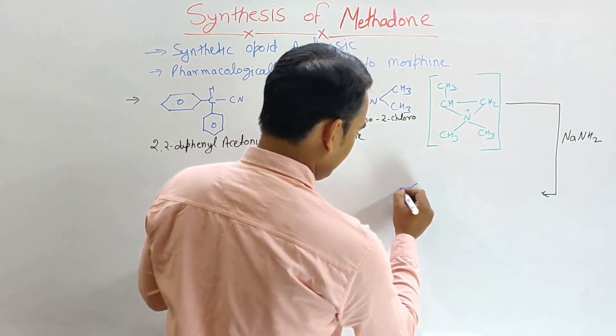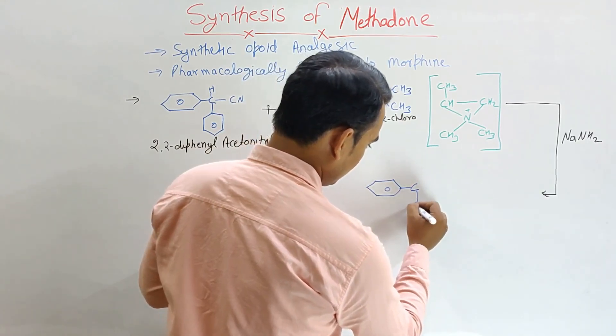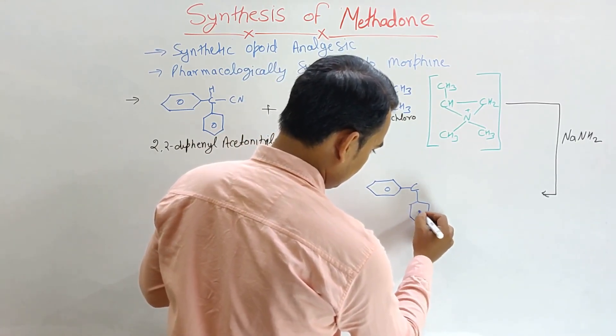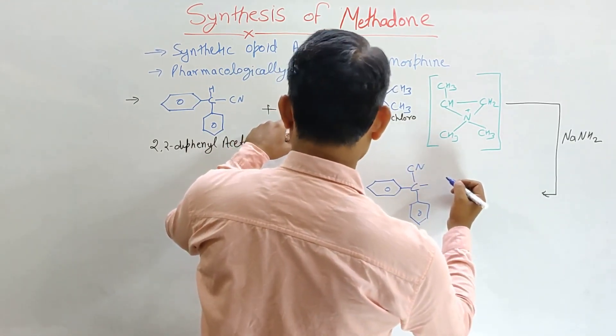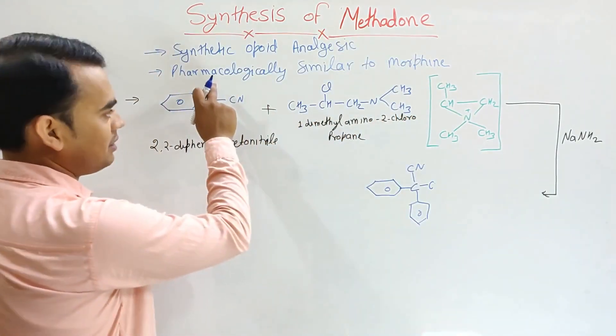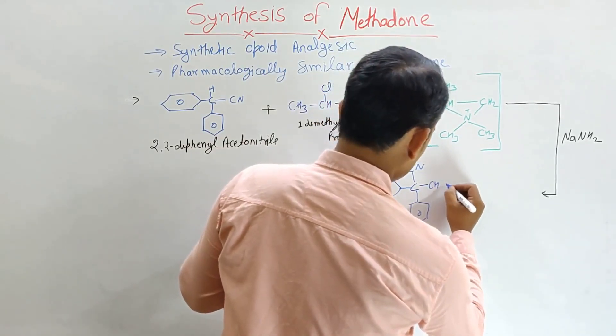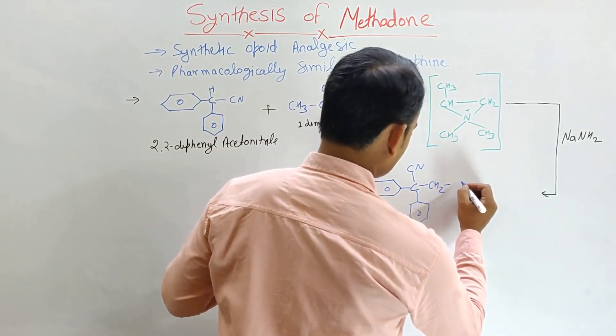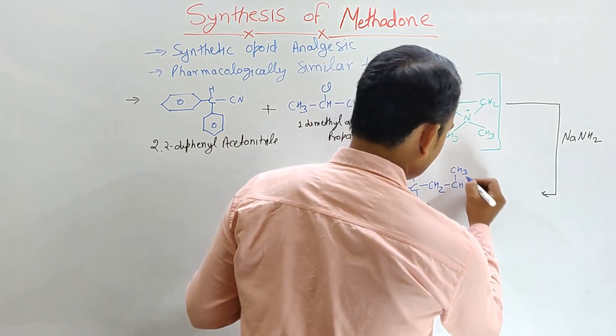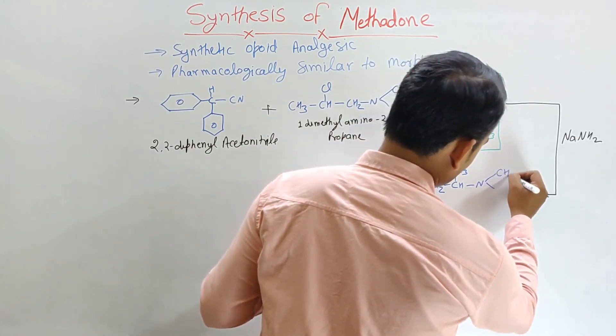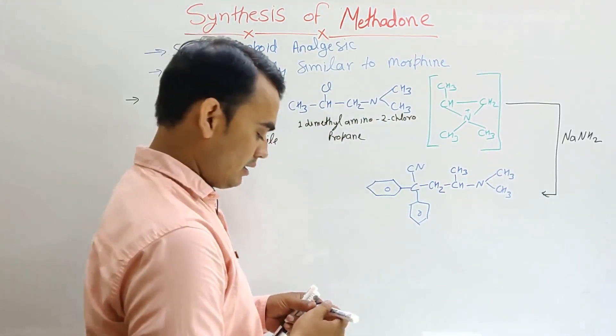That becomes like this. Here it has the phenyl ring, here another phenyl ring. Here it's CN. And now here this H will be removed out with this chlorine and it forms CH, CH2, CH, CH3. And it has the dimethyl group here, CH3 and this CH3. This is the new intermediate formula.